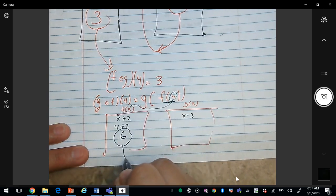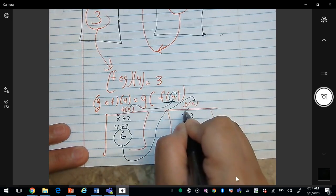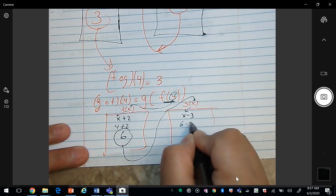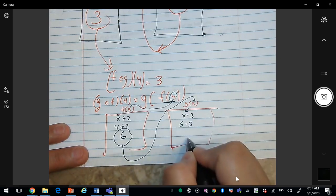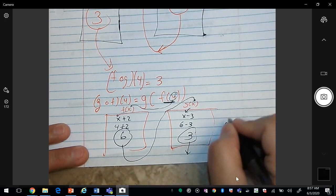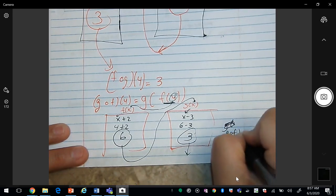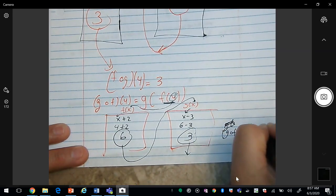This is your output, and now it's going to visit the second function. So wherever you see the x, it replaces that x by that output. 6 minus 3 is 3. So g composed of f of 4 is equal to 3.